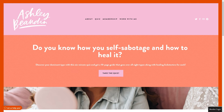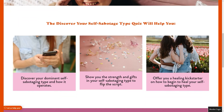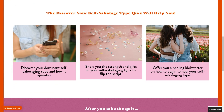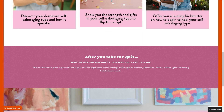By taking this quiz and identifying that self-sabotage is something you want to heal, she's building an email list of qualified leads. As you scroll down the page, she even goes into why this quiz can help you — discover your dominant self-sabotaging type and how it operates, and it's also going to offer you a healing Kickstarter on how to begin to heal your self-sabotaging type. She even goes into what happens after you take the quiz: you'll be brought straight to your result, plus you'll receive a guide in your inbox that goes over the eight types of self-sabotage.